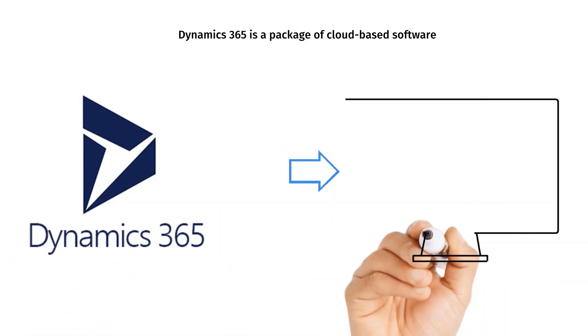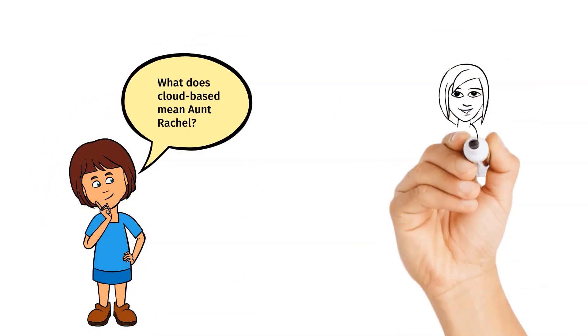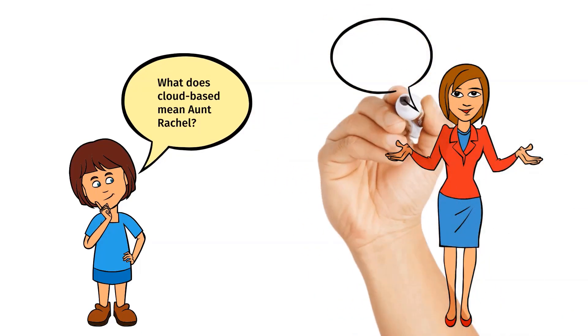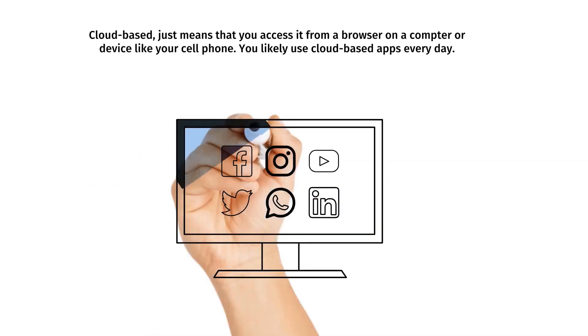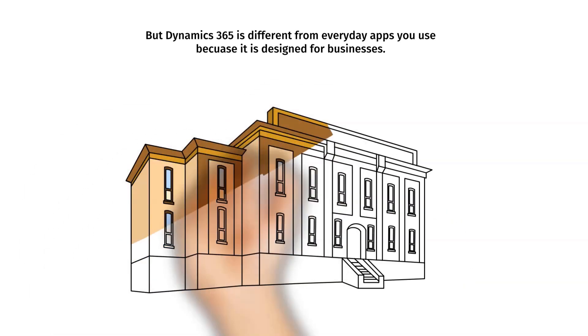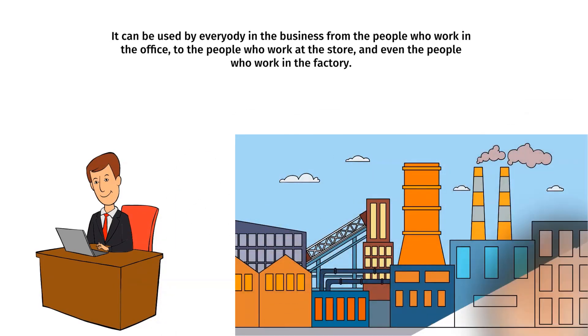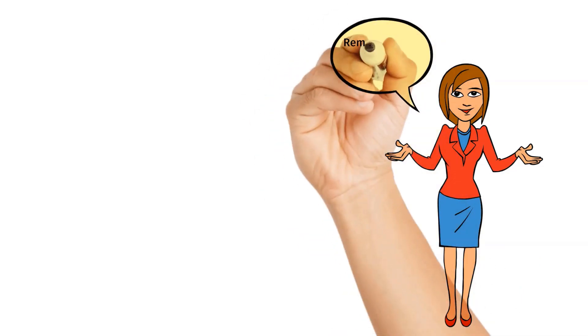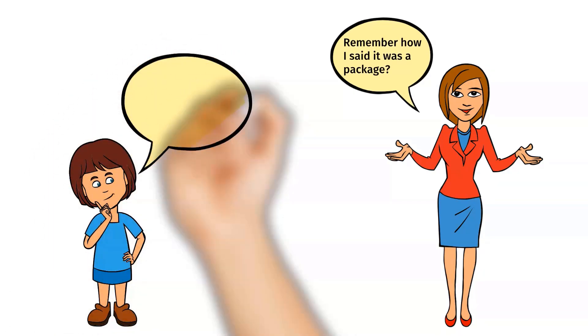Dynamics 365 is a package of cloud-based software. Cloud-based software just means that you access it from a browser on a computer or device like your cell phone. You likely use cloud-based applications every day, but Dynamics 365 is different from everyday apps because it is designed for businesses. It can be used by everybody in the business — from the people who work in the office, to the people who work at the store, and even people who work in the factory.